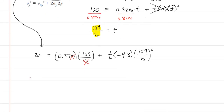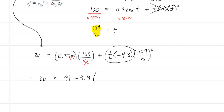Multiplying 0.57 by 159 gives approximately 91. So we have 20 equals 91. Then multiplying one-half times negative 9.8 gives negative 4.9. Squaring 159 gives 25,281, and the denominator becomes V-initial squared. So the equation becomes: 20 equals 91 minus 4.9 times 25,281 over V-naught squared.